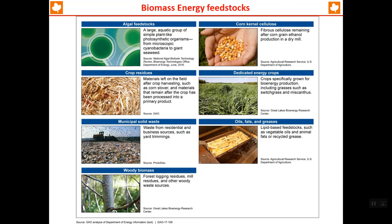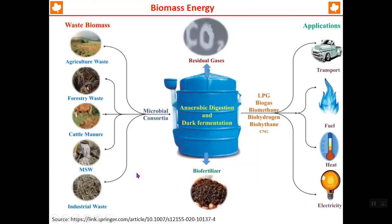What are the sources or feedstocks for bioenergy? There are many feedstocks — for example, oil feedstocks, corn, cellulose, crop residues (material left on the field after crop harvesting), dedicated energy crops grown specifically for bioenergy production, municipal solid waste which is a huge source of energy, oils, fats and greases, and woody biomass which is also a very important source.